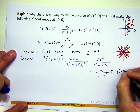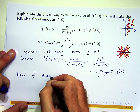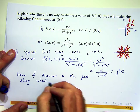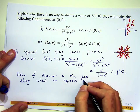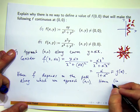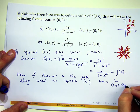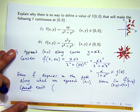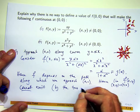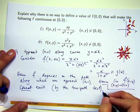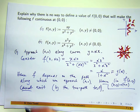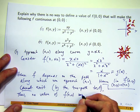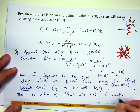This is a function g(α). Hence, f depends on the path along which we approach (0,0). Hence, the limit cannot exist. Therefore, no value of f(0,0) will make f continuous at the origin.